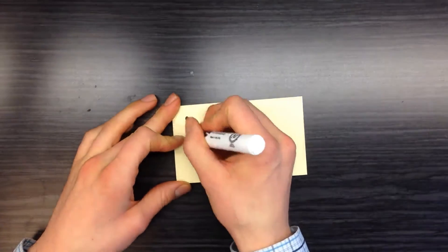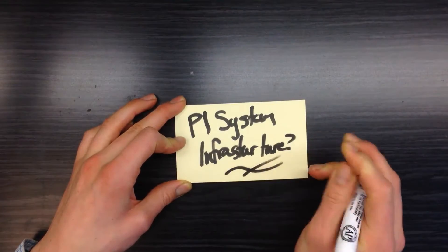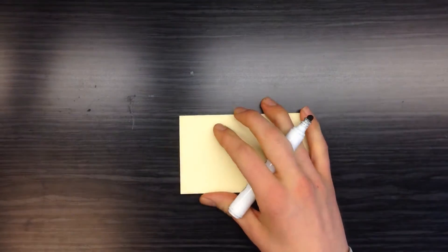So you might ask, what is the PI System as an infrastructure? And to answer that, what is a data infrastructure in the first place?